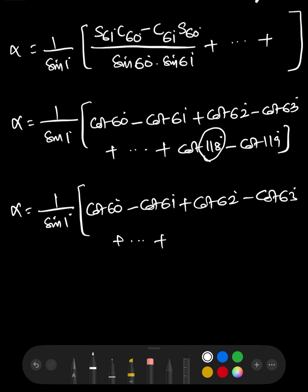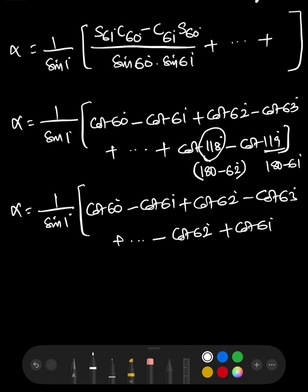Now, cot 118° = cot(180° − 62°) = −cot 62°, and cot 119° = cot(180° − 61°) = −cot 61°. So we get −cot 61° and −cot 62° from those terms. Observing clearly: −cot 61° and +cot 62° − cot 62° — all the remaining values get cancelled in the telescoping.